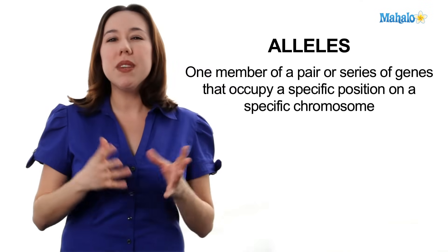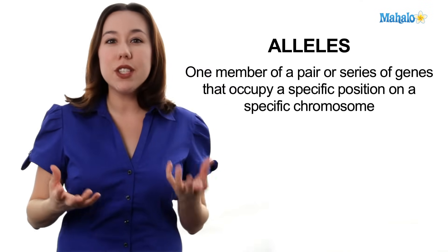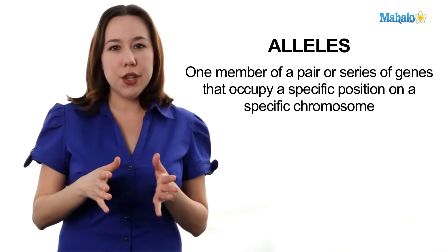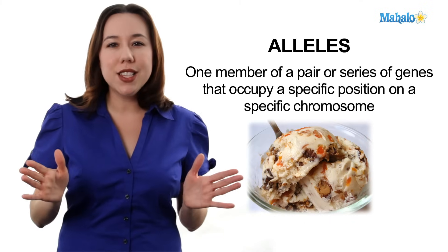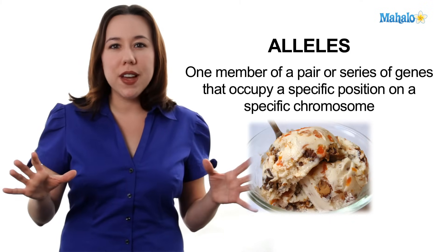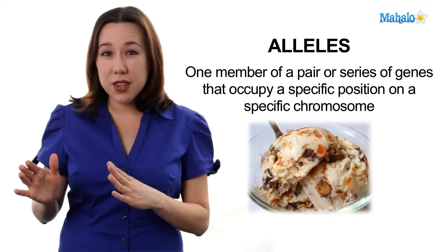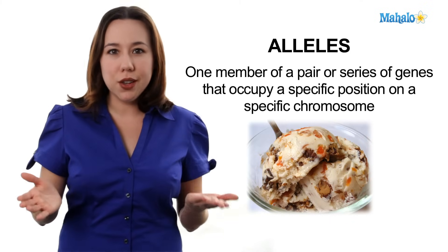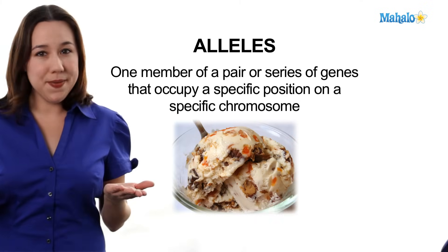First, we're going to talk about alleles. Alleles are going to be like different flavors of genes. You go into the ice cream shop, there's 31 flavors of ice cream. Even though they're all different flavors, they're all still ice cream. Alleles are going to be those different flavors of genes that you have available to you.